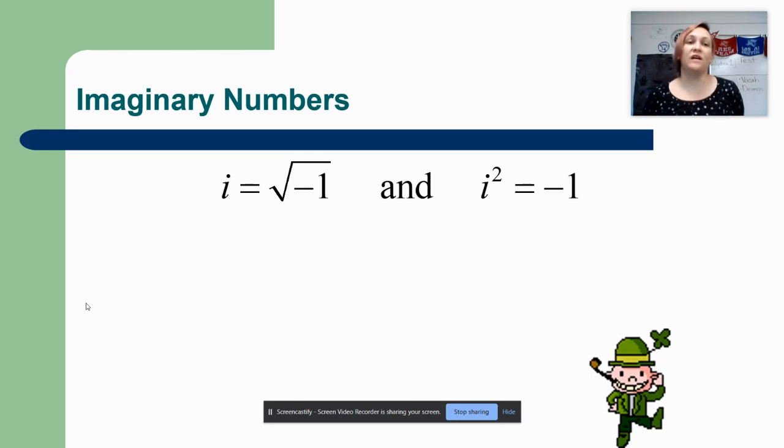So the definition of an imaginary number is the square root of negative 1. In the past whenever you were given the square root of a negative number you just stopped and your teacher either told you to write 'no solution' which is not completely accurate, or your teacher told you to write 'no real solutions'.